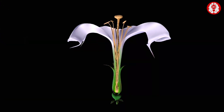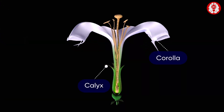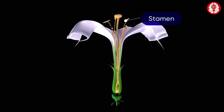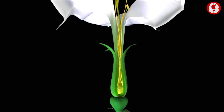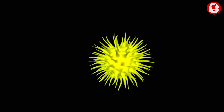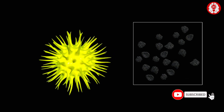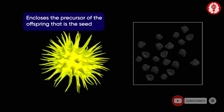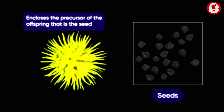In flowering plants, the calyx, the corolla, and the stamens wither away after fertilization, and the ovary forms the fruit. The fruit thus formed encloses the precursor of the offspring, that is the seed.